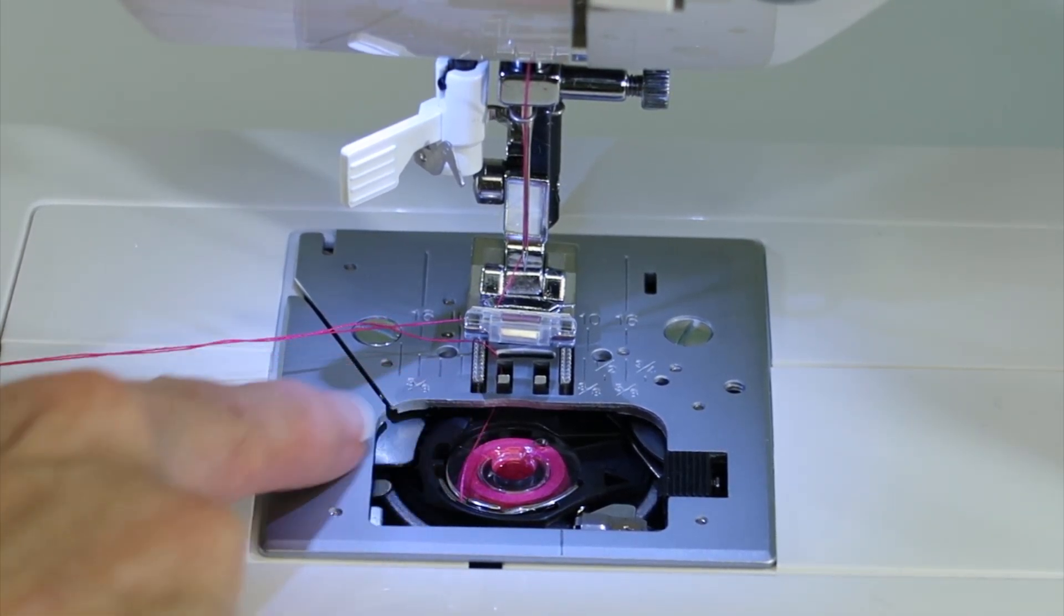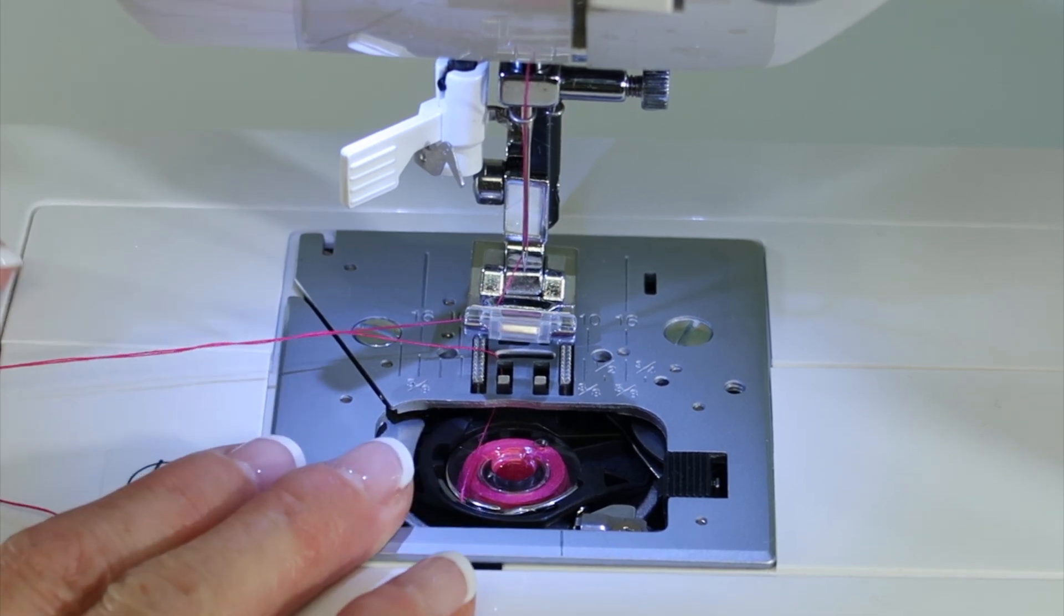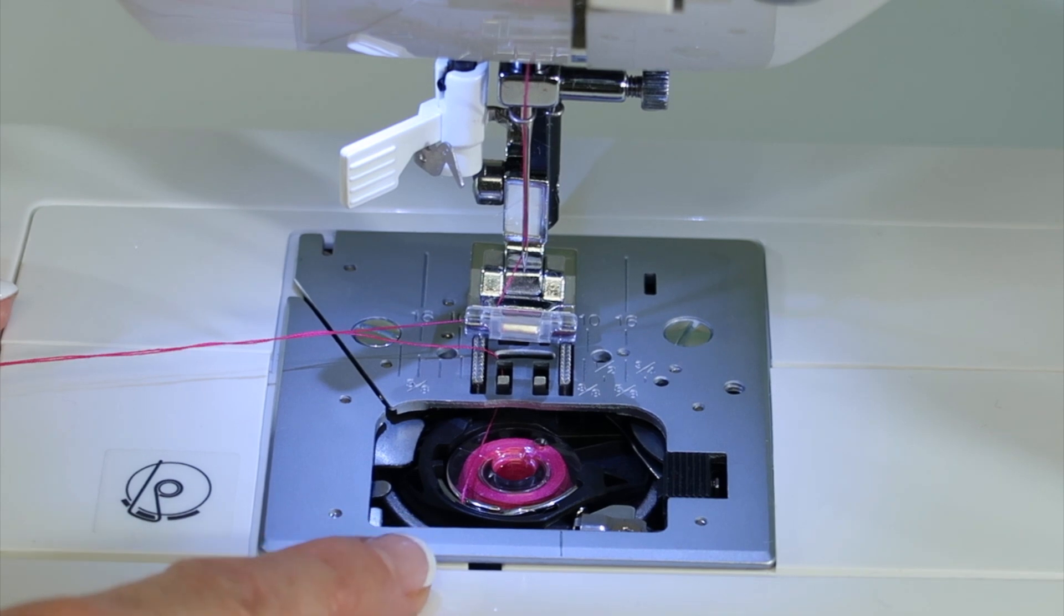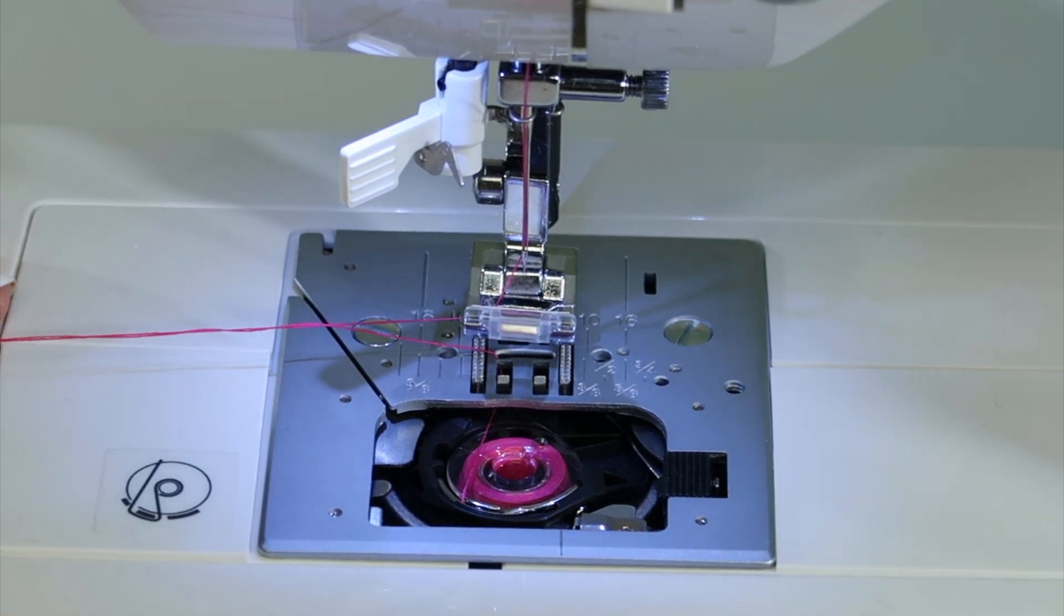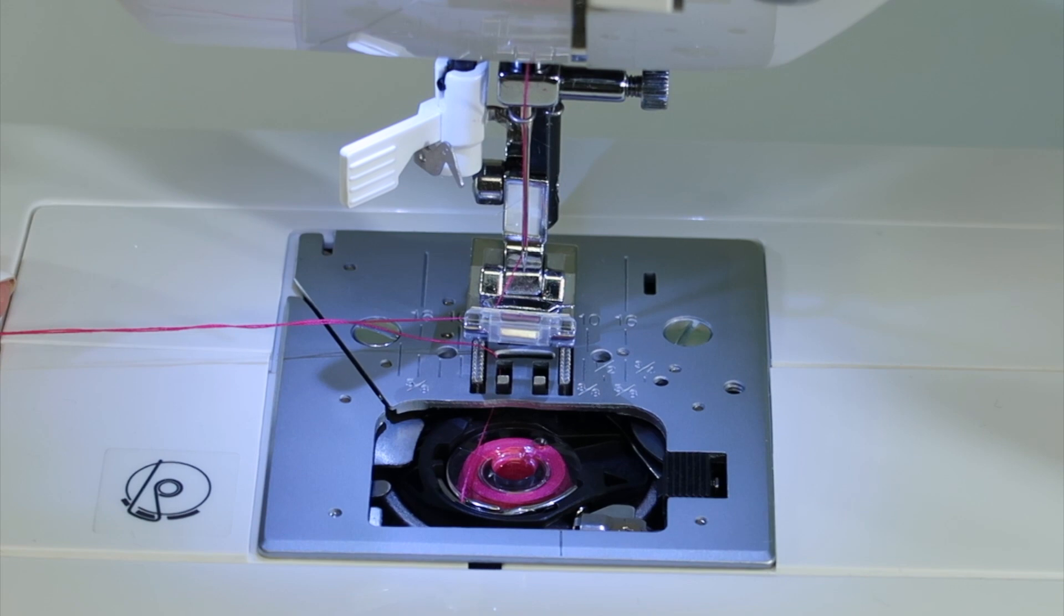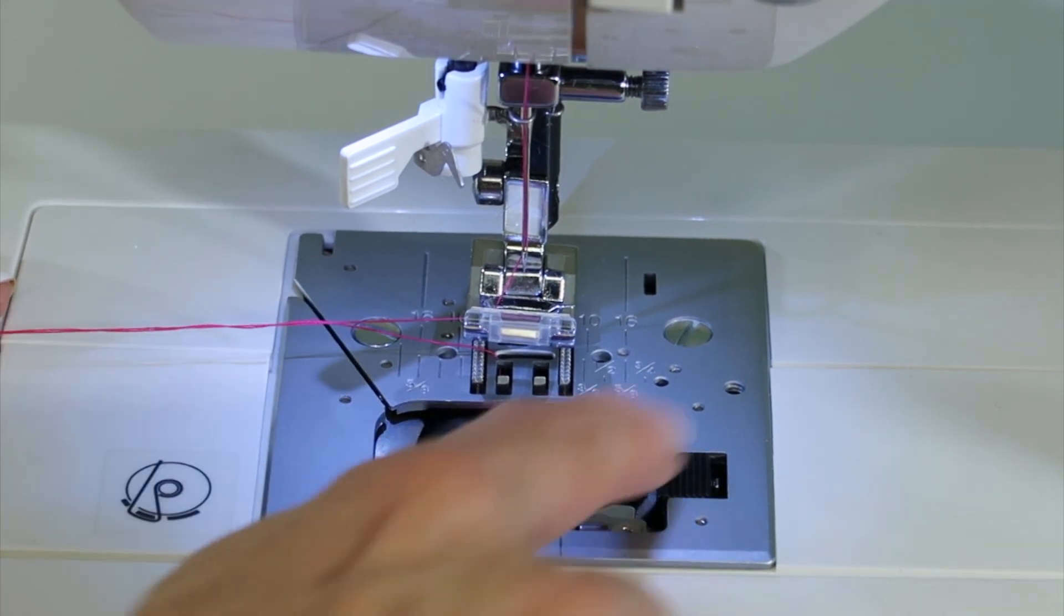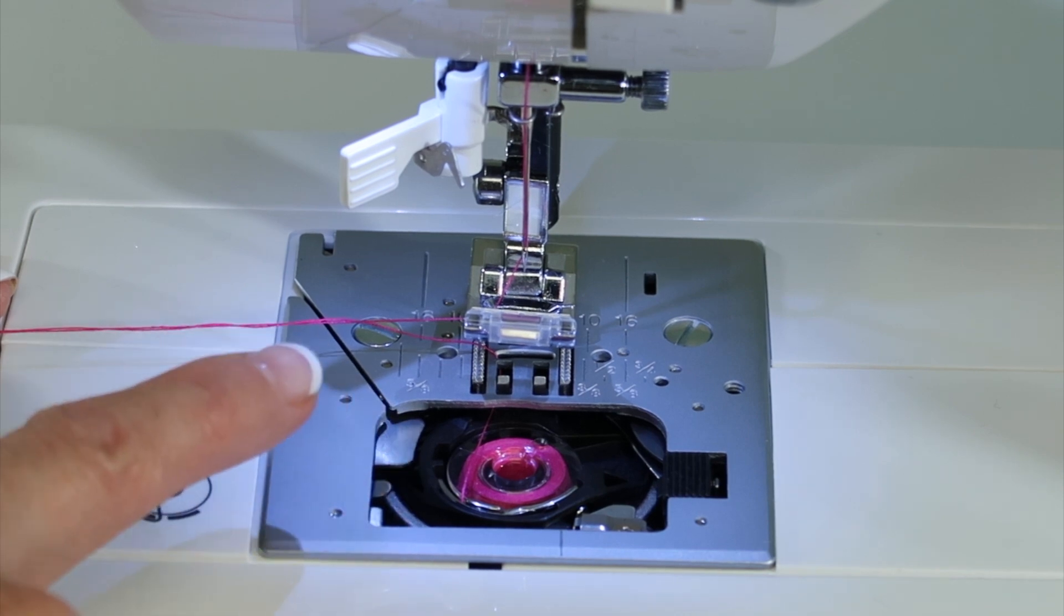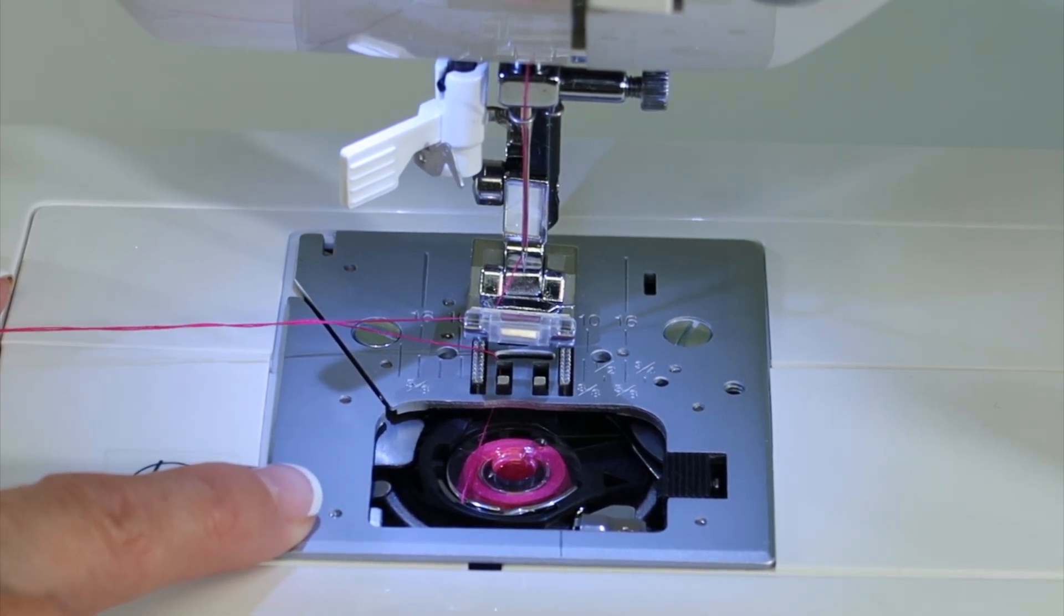This gives you an idea that when you don't clean the machine, there's a lot of lint that gathers up in that area. Sometimes when you get skipped stitches or your thread breaks unexpectedly, you need to get underneath this throat plate, take this screw off and clean out this whole area. Check out our cleaning and maintenance video so you know how to do it correctly.